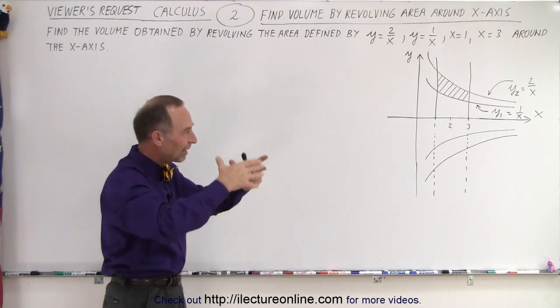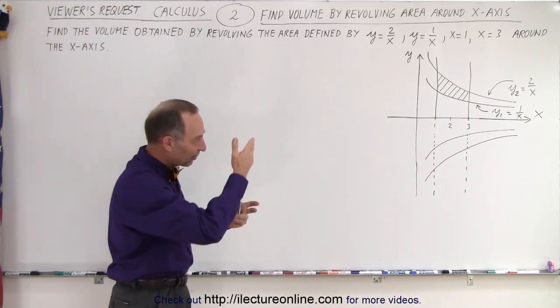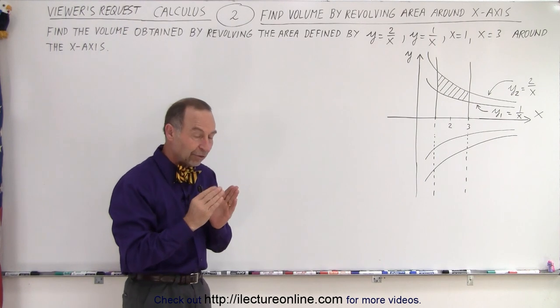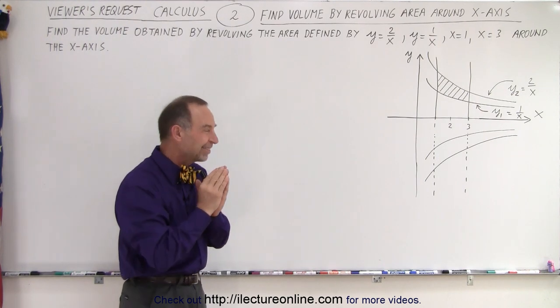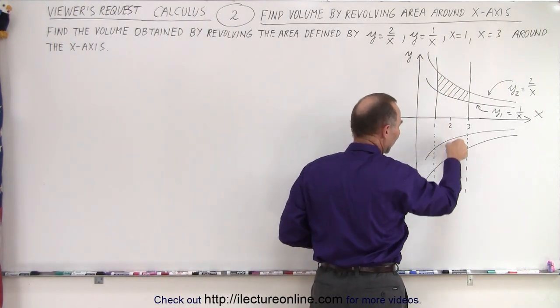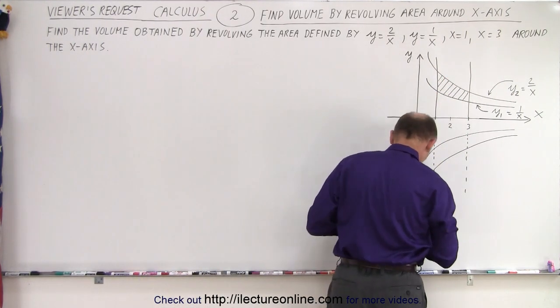We revolve that around the x-axis and you have kind of a curved, vase-like shape that's hollow inside, doesn't have a base. How do we do that? You need to find a way to define a small volume segment of that and we can do that by slicing in this direction.